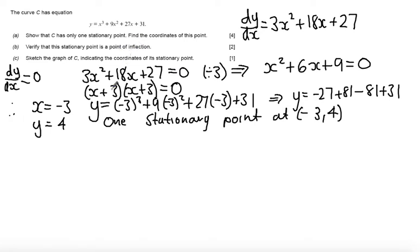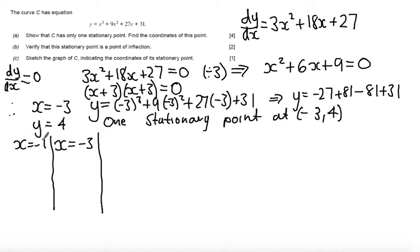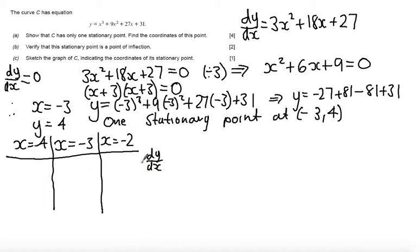So what I'm going to do is examine the gradient either side of the point x equals minus 3, taking one value to the left and right. I'll look at x equals minus 4 and x equals minus 2. I'll evaluate dy by dx and do a little sketch. At x equals minus 3 the gradient is 0, represented by a flat line.